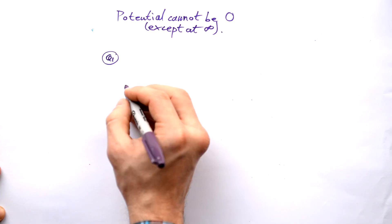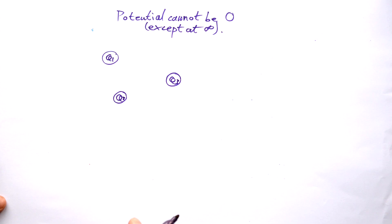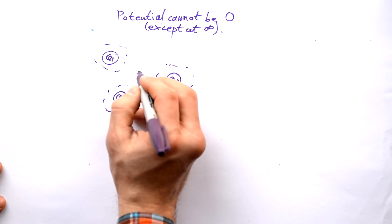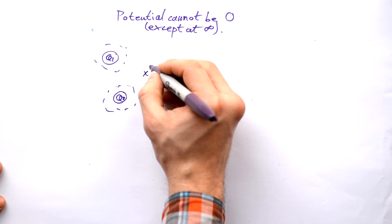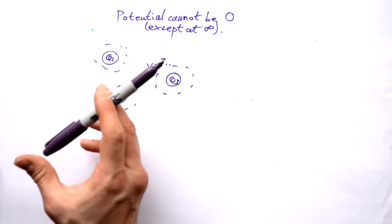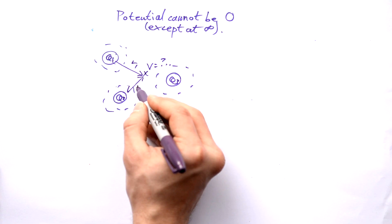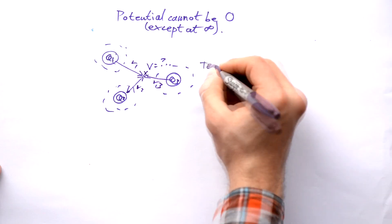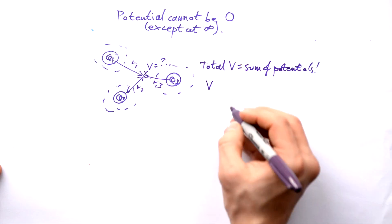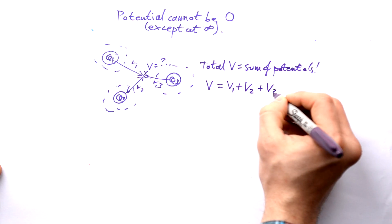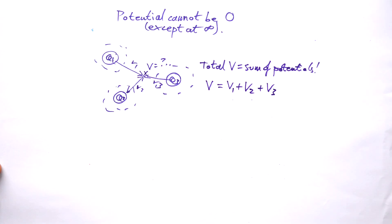Say we have lots of positive charges all producing their own electric field with their own equipotentials. If I want to find the potential at a given point due to Q1, Q2, and Q3 at distances r1, r2, and r3 respectively, it's as easy as just adding them up. The potential at that point is the potential due to Q1 plus the potential due to Q2 plus the potential due to Q3. If you have any questions or suggestions, please leave them in the comments below, and I'll see you next time.